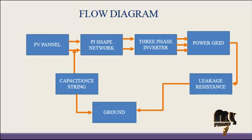The capacitor string and leakage resistance are used to find out the leakage current and voltage. These blocks consist of the following modules: PV module generation, input sources, DC to AC conversion, PWM generation, pi shape network, capacitor string, and power grid.